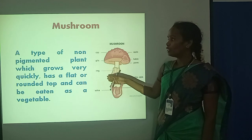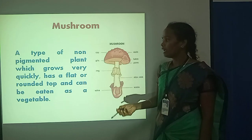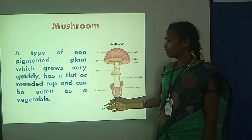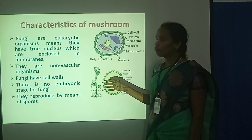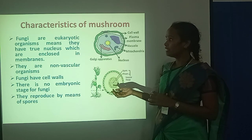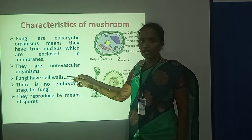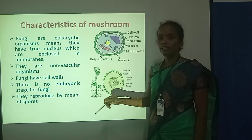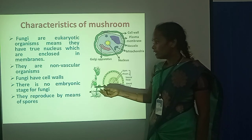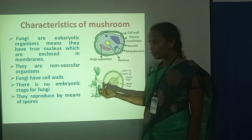And now we can see the mushroom. Mushroom is a type of non-pigmented plant. It grows very quickly and it has a flat and brown tongue. It can be eaten as a vegetable. The characteristics of mushrooms: mushroom is one of the eukaryotic organisms because they have a true nucleus. It is a non-vascular organism — non-vascular means a lack of vascular tissues like phloem and xylem. There are no embryonic stages in mushrooms. They are reproduced by spores.